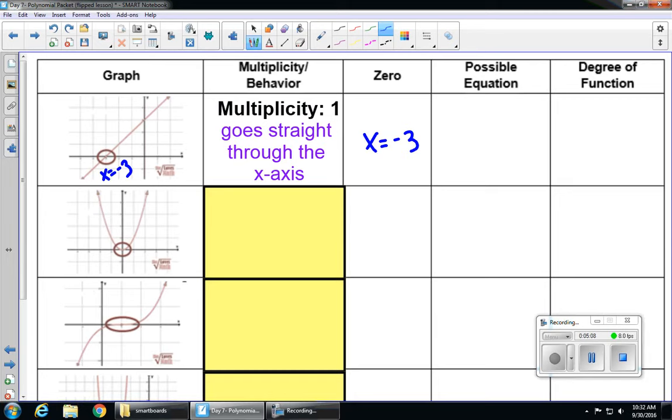Our possible equation is going to be y equals (x plus 3) to the 1. I'm showing it with an exponent of 1 for right now so you can start to see the pattern, but we know that exponent of 1 is not necessary. And this would be a degree 1 function.